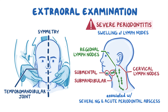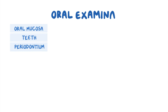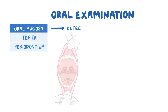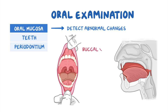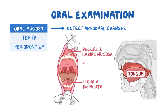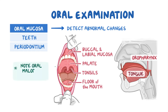The intraoral examination is further subdivided into the examination of the oral mucosa, teeth, and periodontium. The oral mucosa examination is used to detect abnormal changes of the buccal and labial mucosa, tongue, floor of the mouth, palate, tonsils, and oropharynx. Additionally, when evaluating the condition of the oral mucosa, it's important to note the presence of oral malodor, also known as halitosis.